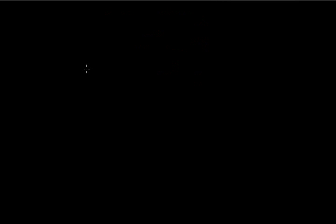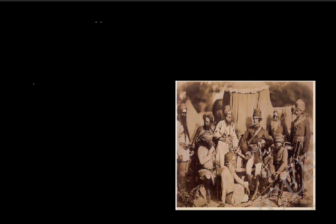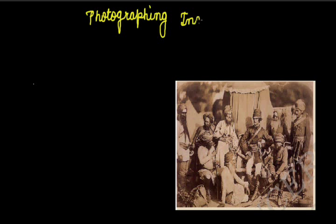Now we will discuss about Photographing India. We have seen how European painters created a variety of images of India; such images were also being produced by photographers. By the mid-19th century, photographers from Europe began traveling to India, taking pictures, setting up studios, and establishing photographic societies to promote the art of photography. Some of them were portrait painters who began taking photographs of imperial officials, presenting them as figures of authority and power. Others traveled around the country searching for ruined buildings and landscapes, very much like some of the painters we have discussed.